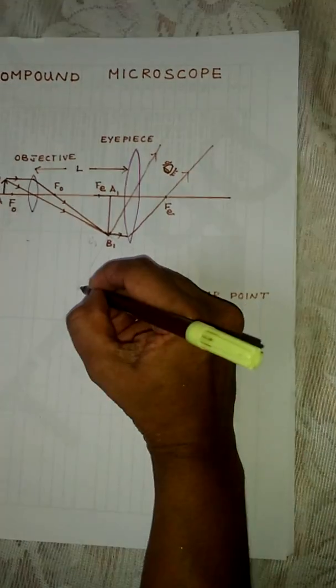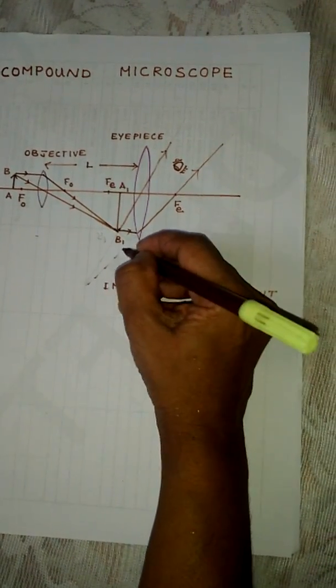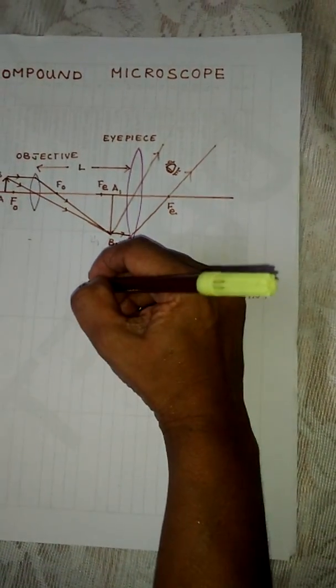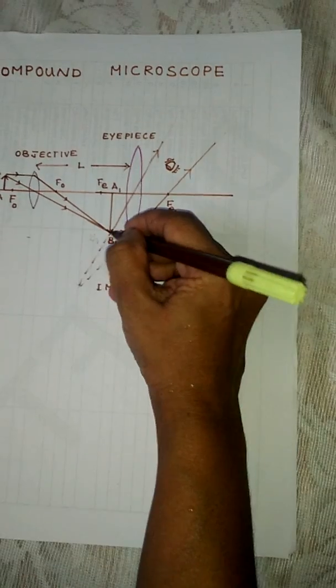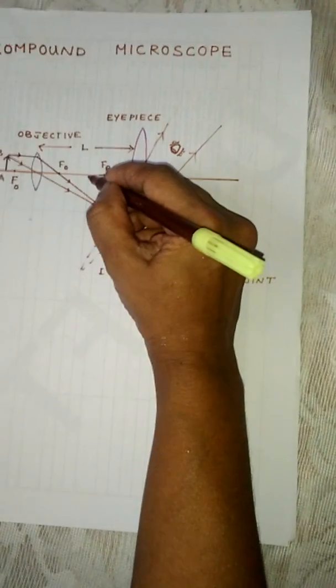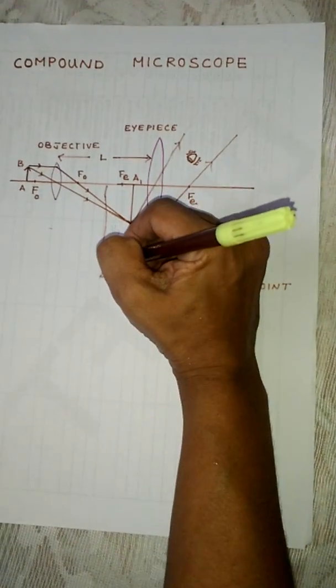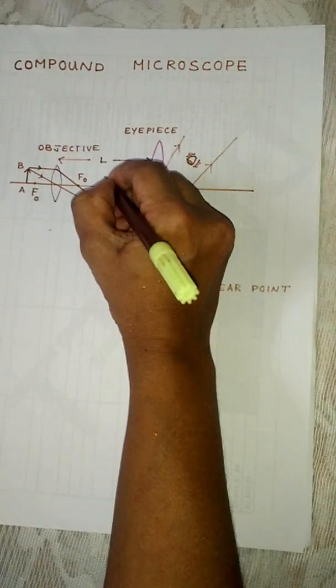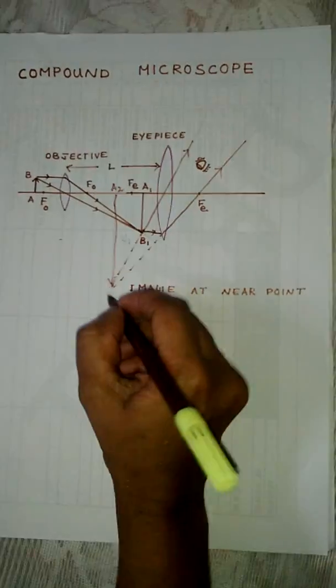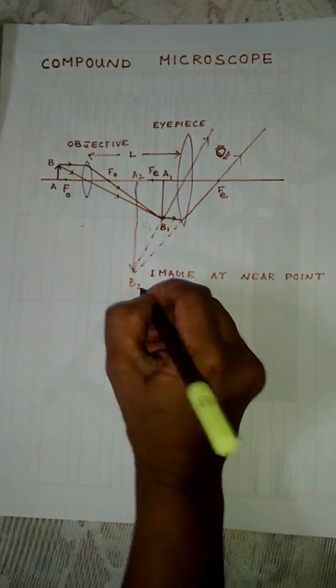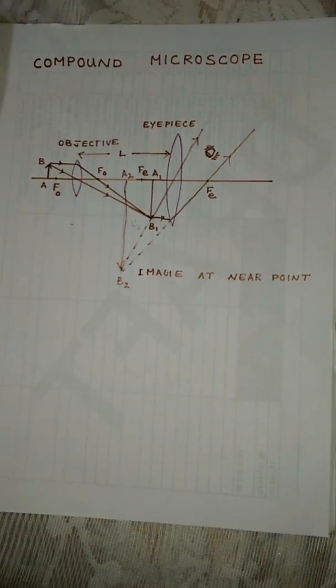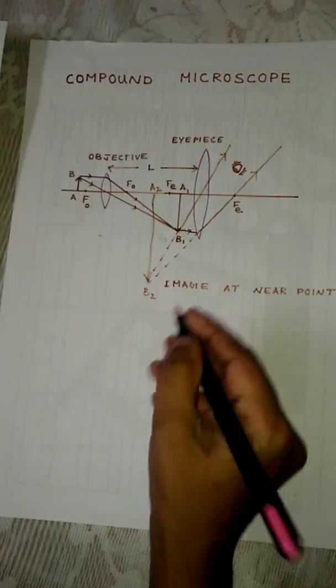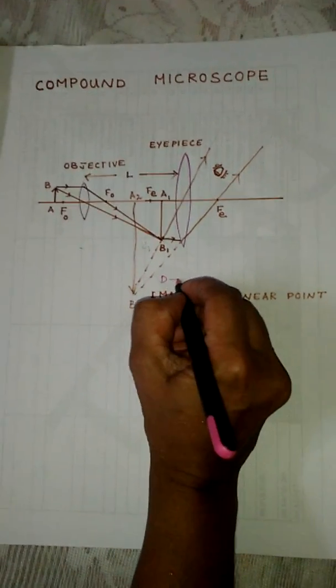The position of the object is adjusted such that the final image is formed at the near point. The final image A2B2 is formed at the near point, and the near point distance we can denote as D.